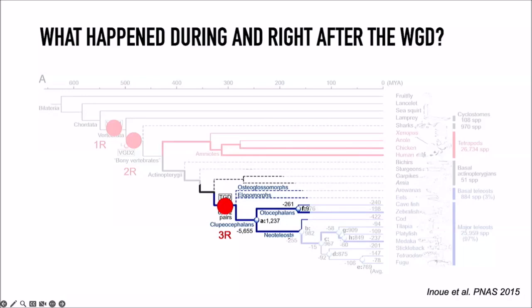There are three main groups of teleosts that radiated after the whole genome duplication: the osteoglossomorphs, the elopomorphs, and the clupeocephalans. We don't really know who came first — we don't understand the phylogenetic relationships between these groups. This has been an open question since at least the 1970s.